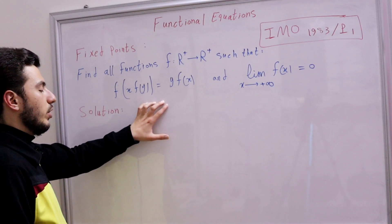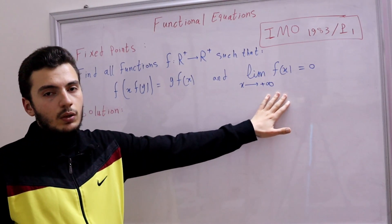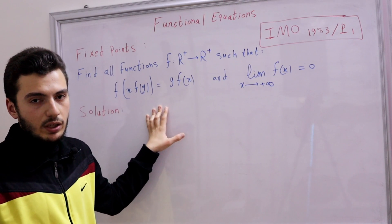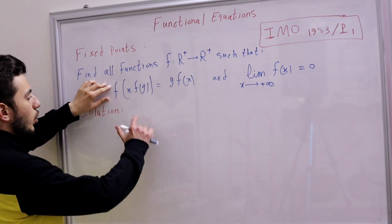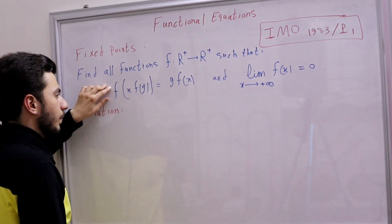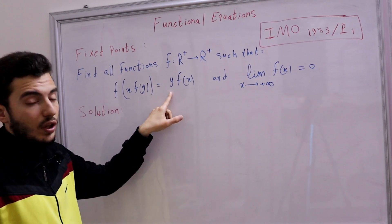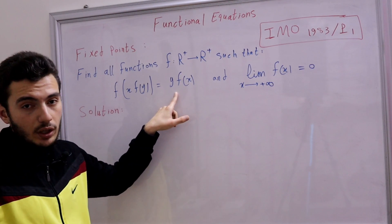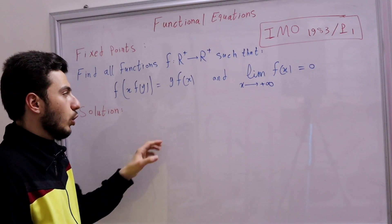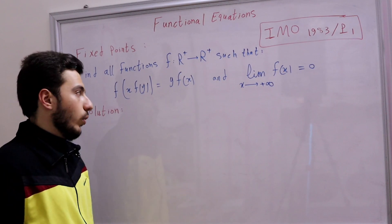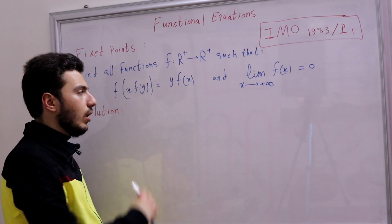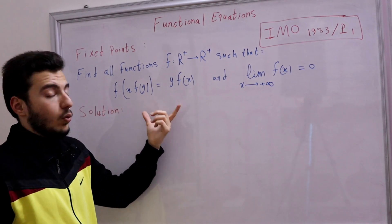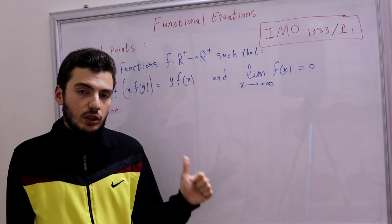Let's solve this. We deal with the functional equation first since we can only substitute there. Notice there's a free y in the equation. That means we can prove that f is surjective. We simply substitute y with y over f(x) — since f cannot be 0 — and that makes f(x·f(y)) equal to y. So f is surjective.